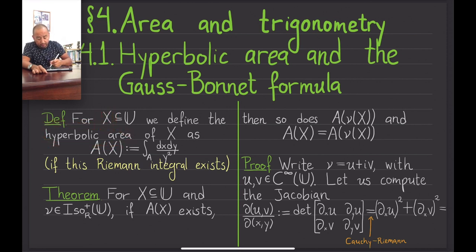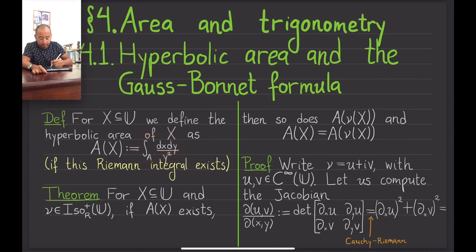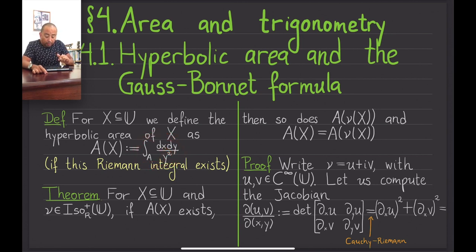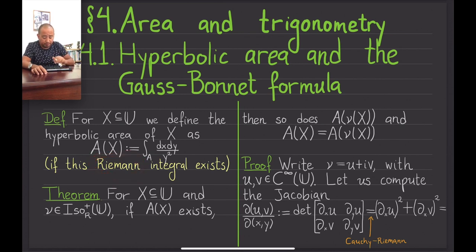We defined the hyperbolic area of a subset of the upper half plane as follows, in terms of this integral. The usual Euclidean area would only have this integral, but here we weight the points somehow — and points close to the real line become very heavy. That's the formula, provided this Riemann integral exists.